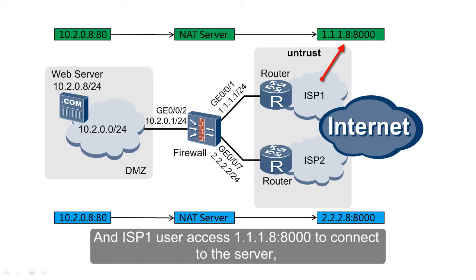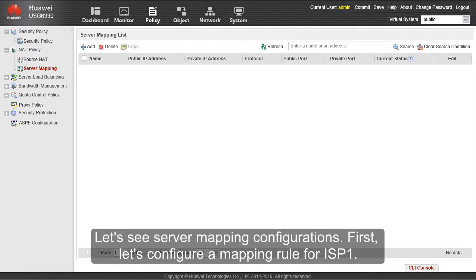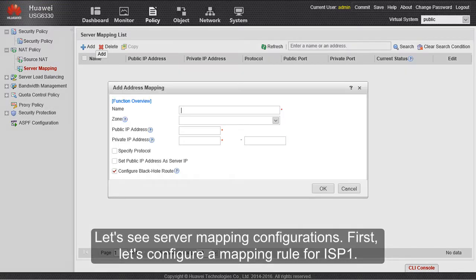An ISP1 user accesses 1.1.1.8:8000 to connect to the server, and an ISP2 user accesses 2.2.2.8:8000 to connect to the server. Let's see the server mapping configurations.